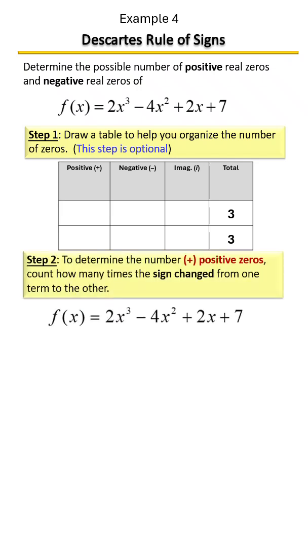Next, we're going to identify our positive zeros by checking to see how many times the sign changed from one term to the next. Let's check from first to second. Did it change? Yes. Did it change? Yes.